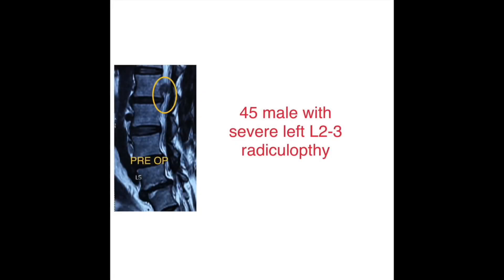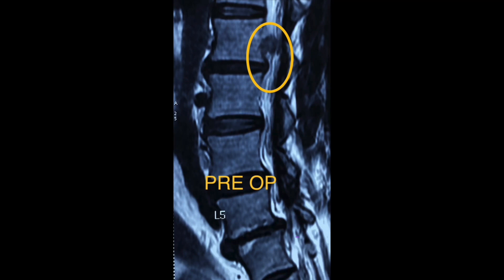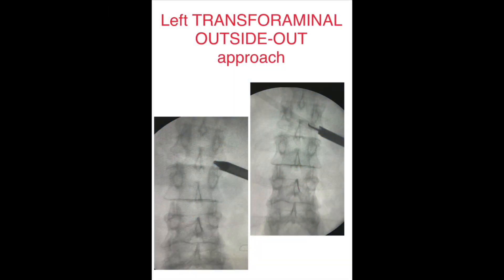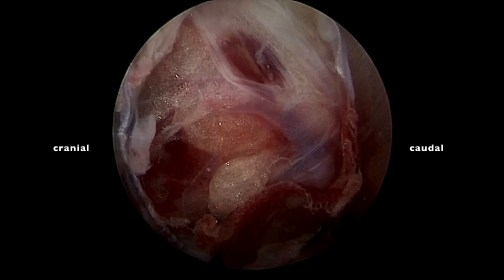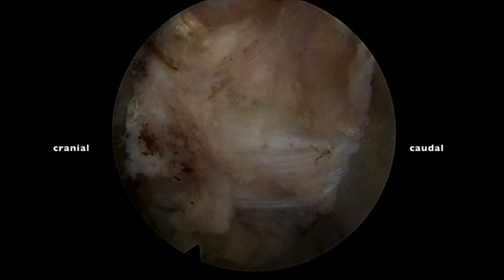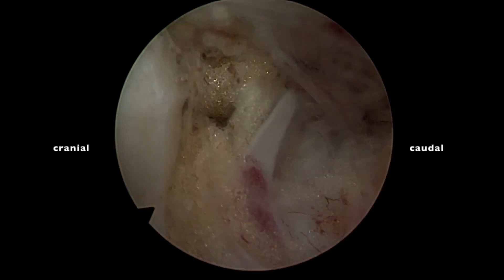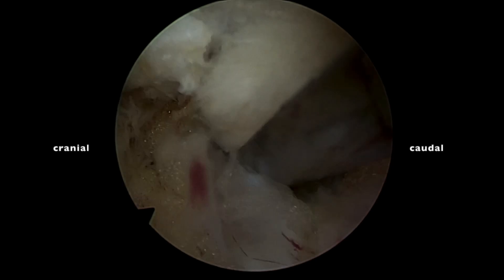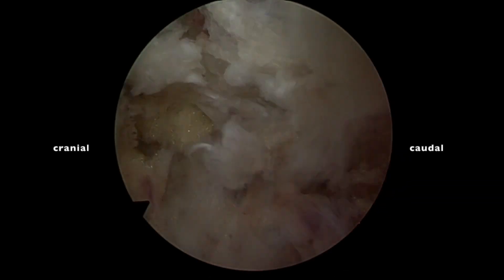45-year-old male with severe left L2-L3 radiculopathy, MRI showing left L2-L3 up-migrated disc extrusion. We did a left transforaminal outside-out approach where the sheath lies entirely in the foramen without entering the disc. Here, 12 o'clock is dorsal, 9 o'clock is cranial, 3 o'clock is caudal, because we are standing on the left side of the patient. Here I am removing the soft tissue.